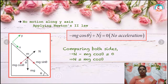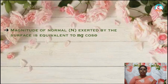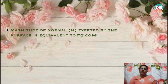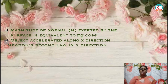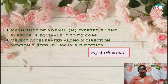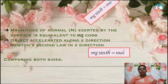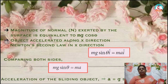The object slides along the x direction, so it has an acceleration. Applying Newton's second law in the x direction: the force acting along the x direction is mg sin theta i-cap, which equals ma i-cap. By comparing the components, mg sin theta equals ma. Since m and m cancel, acceleration a equals g sin theta. We have found the acceleration of the sliding object to be g sin theta.